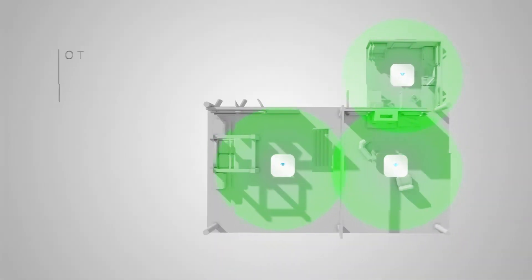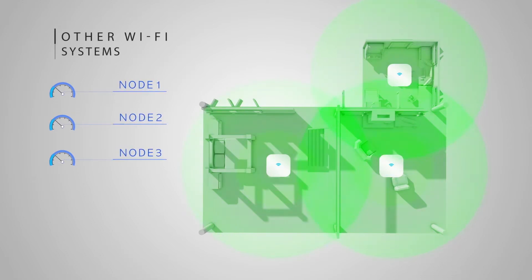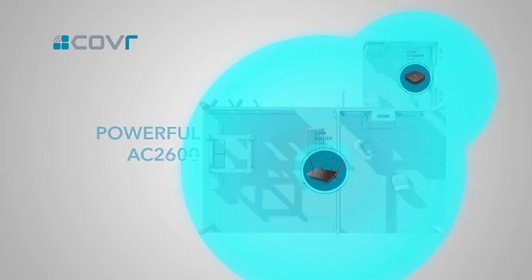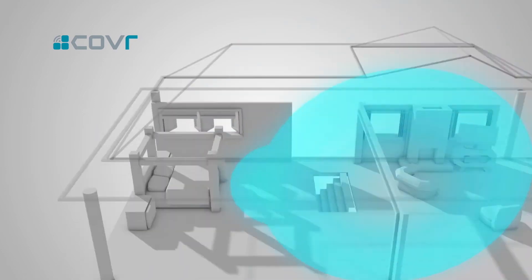Unlike some Wi-Fi systems that use multiple low performance Wi-Fi connection points, Cover uses the powerful AC 2600 Wi-Fi router at its core to handle the bulk of your Wi-Fi activity. This Wi-Fi power zone gives you speeds up to two times faster than other Wi-Fi systems where you need it most.